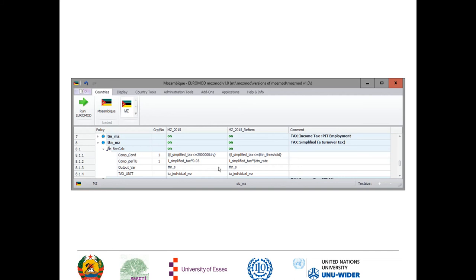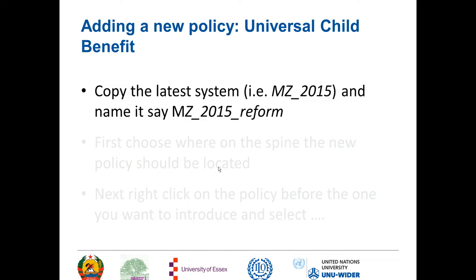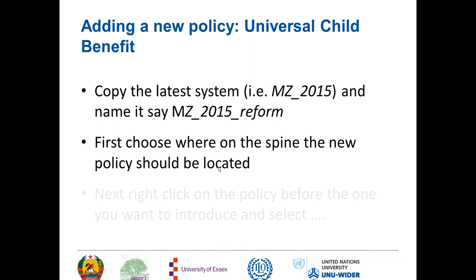So now let's go to the concept of adding a new policy. We'll do a straightforward one here — we're going to add a universal child benefit. Again, you start by copying the latest system; we'll use the one that we've already copied and name it MZ_2015_reform as before. Then you have to choose where on the spine the new policy should be located. Remember we talked about the spine earlier — you must pick the right point, just in case there are any conditions that require earlier policies to have been simulated first.